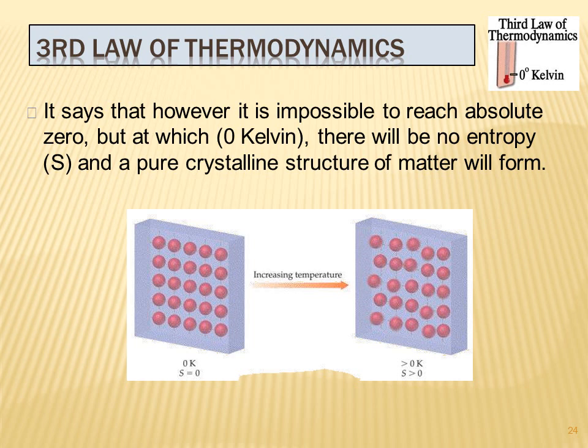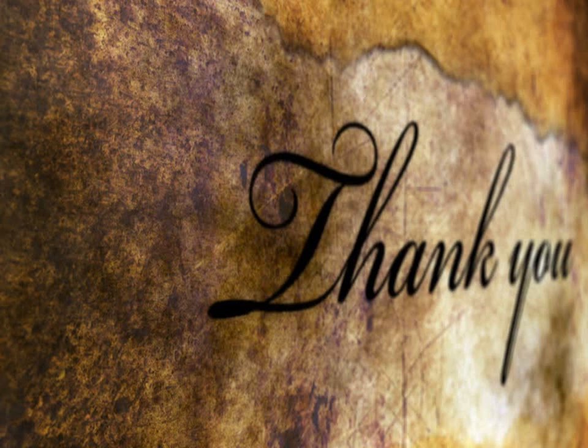The third law of thermodynamics states that it is impossible to reach absolute zero, but at zero Kelvin there will be no entropy and a pure crystalline structure of matter will form. There will be no disorder — matter converts into a pure crystalline solid form. This is the end of the video.